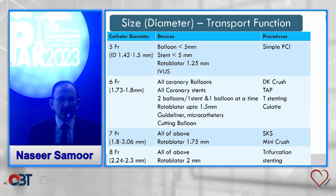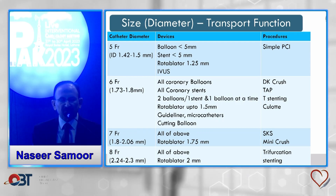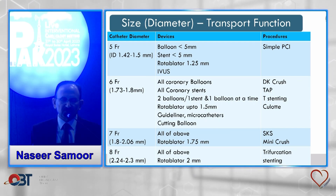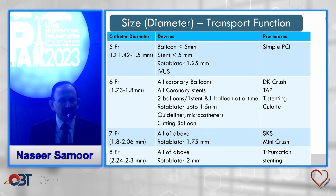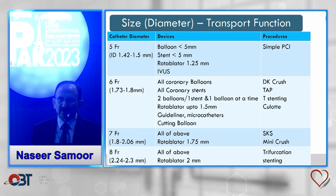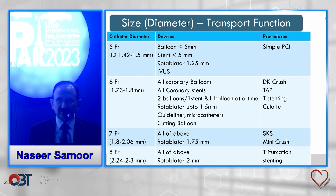Regarding catheter sizing, the size is determined by the distance between the secondary and primary curves. For example, if the distance is three centimeters, it is a size 3 guide. The external diameter is measured in French — one French equals 0.33 millimeters — so a 6 French catheter has an external diameter of two millimeters.